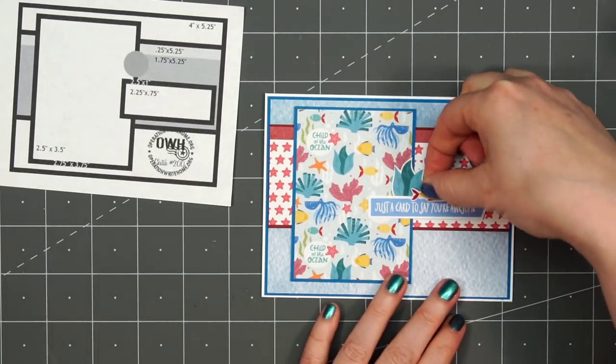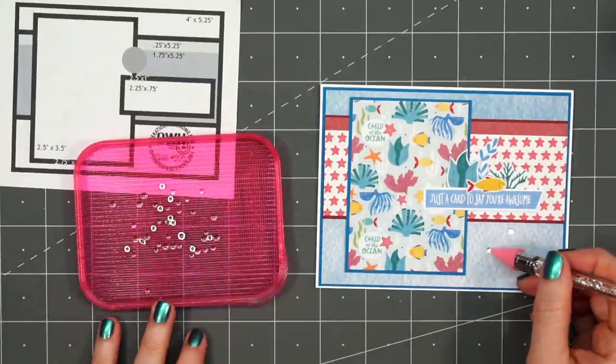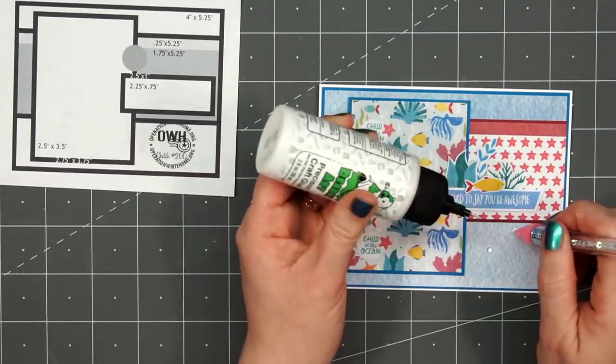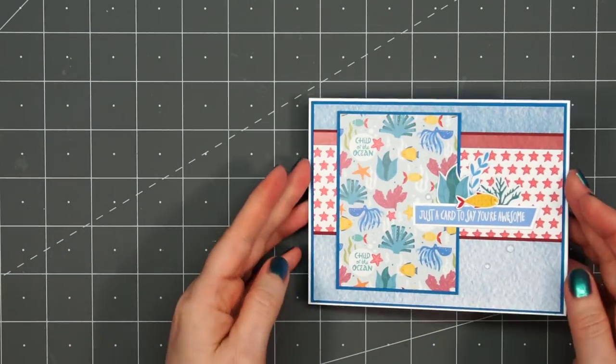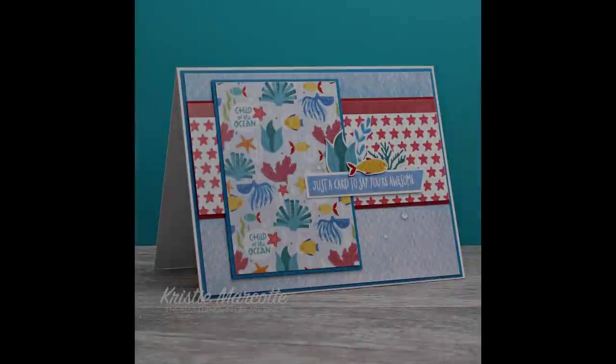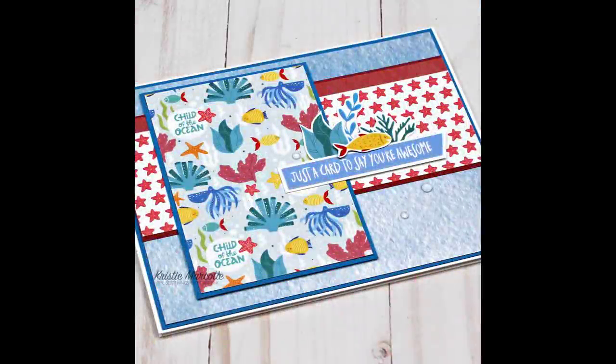Then to finish off the card, I'll bring in some more of the dew drops. I'll put two of them underneath the sentiment toward the right and one above the sentiment on the left. With all of those busy patterns, I didn't think the card needed anything else. So there is my finished card and again I did make two using this sketch. I really like how all three cards turned out but I think the turtle card is my favorite. Those turtles are adorable.